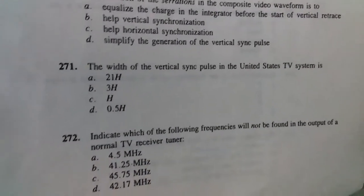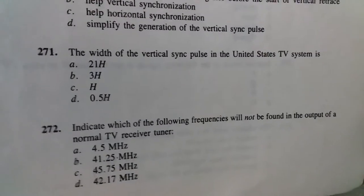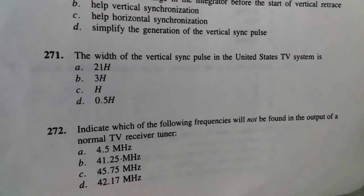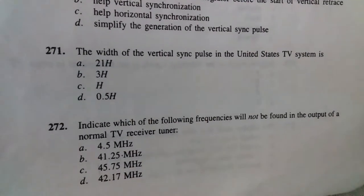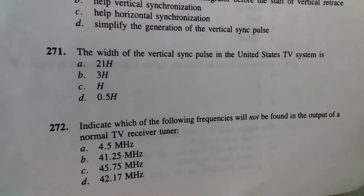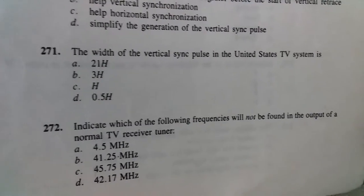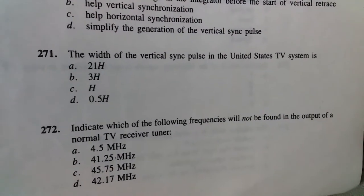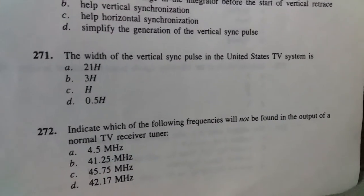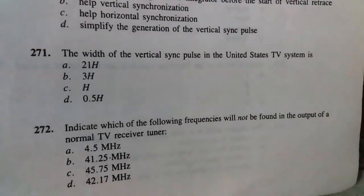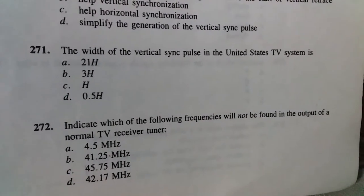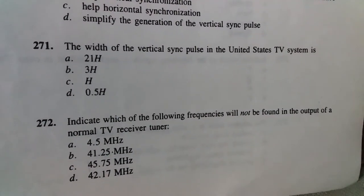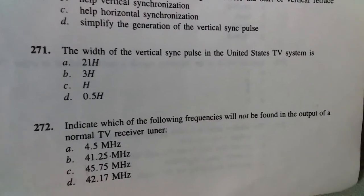The width of the vertical sync pulse in the United States TV system is 3H. Indicate which of the following frequencies will not be found in the output of a normal TV receiver tuner: 4.5 megahertz.